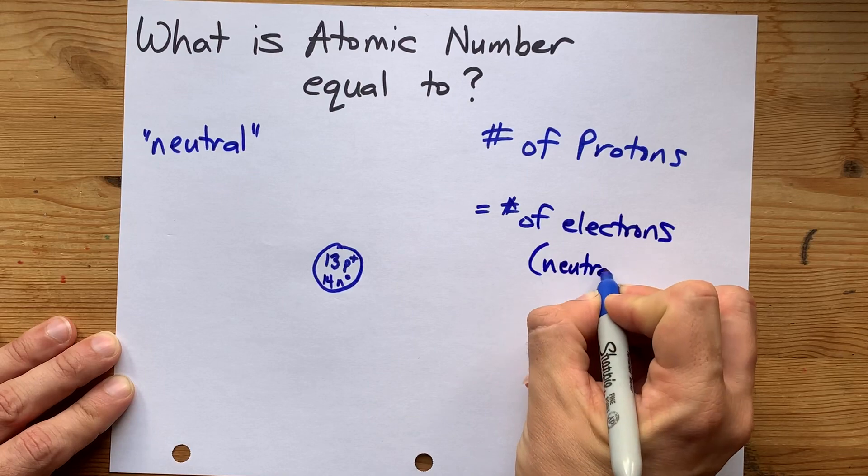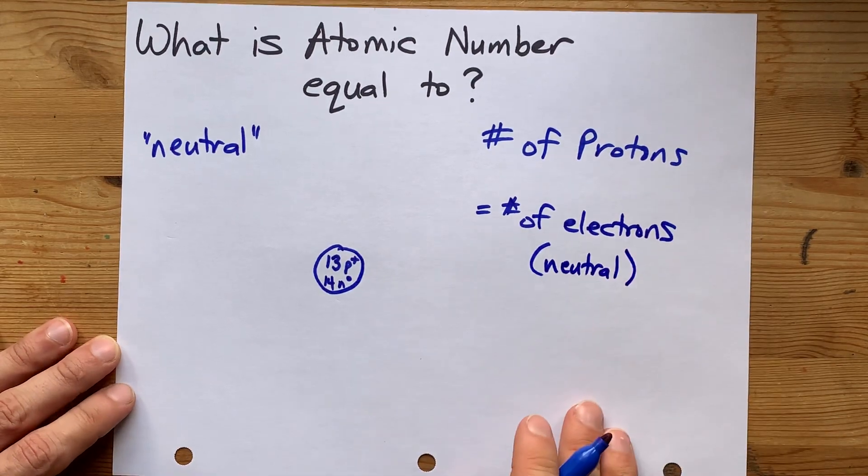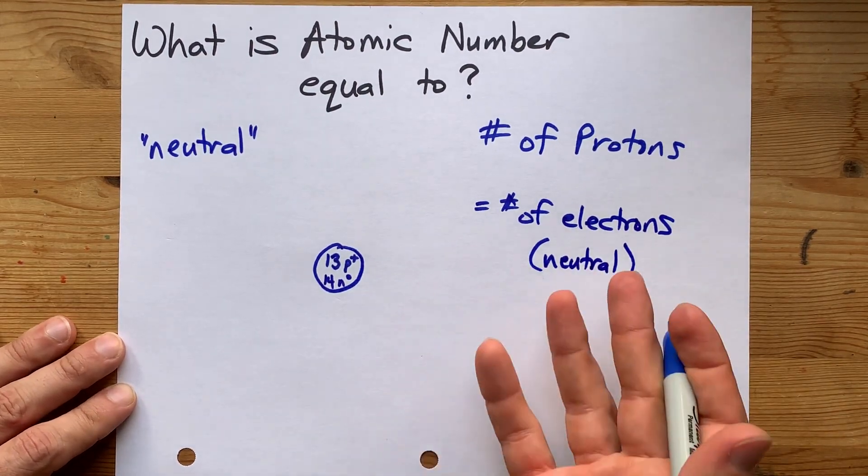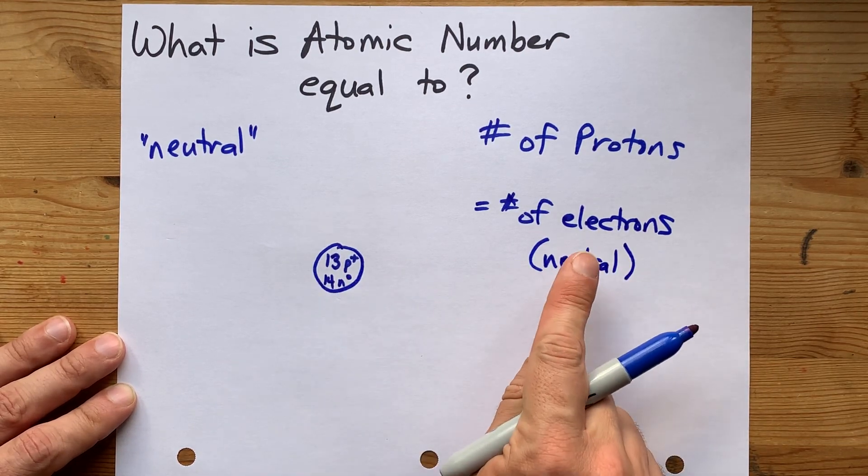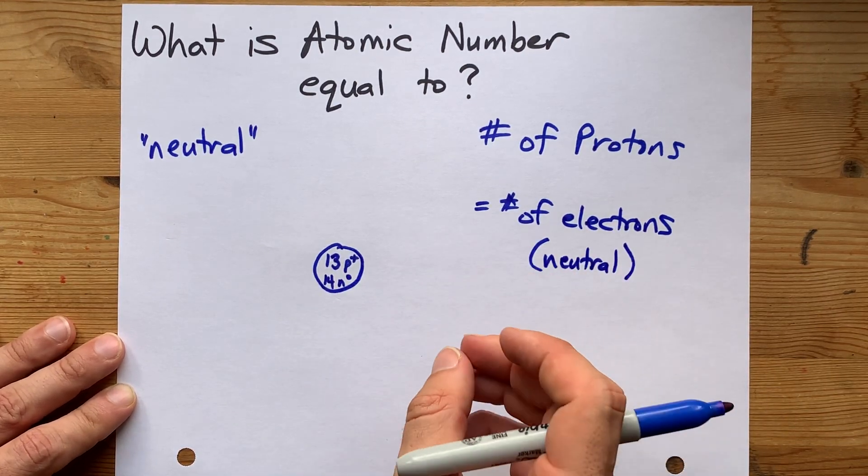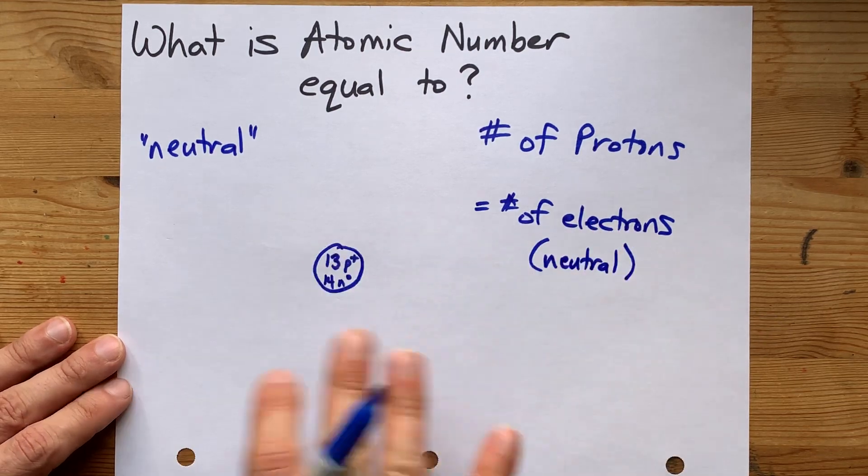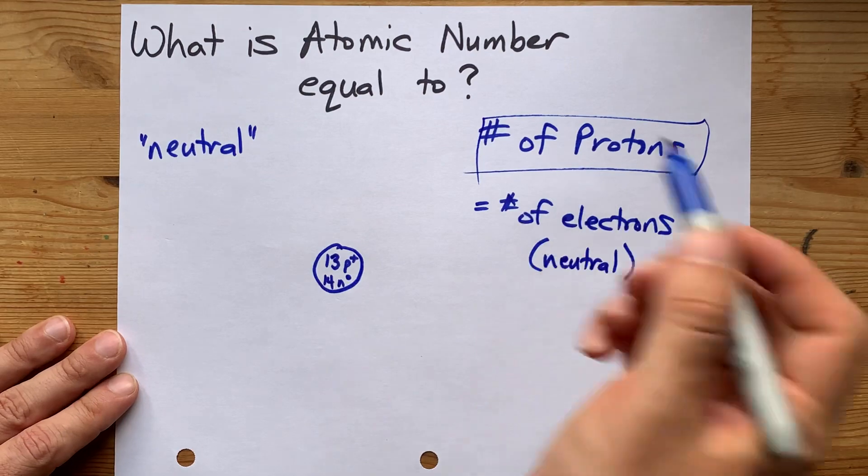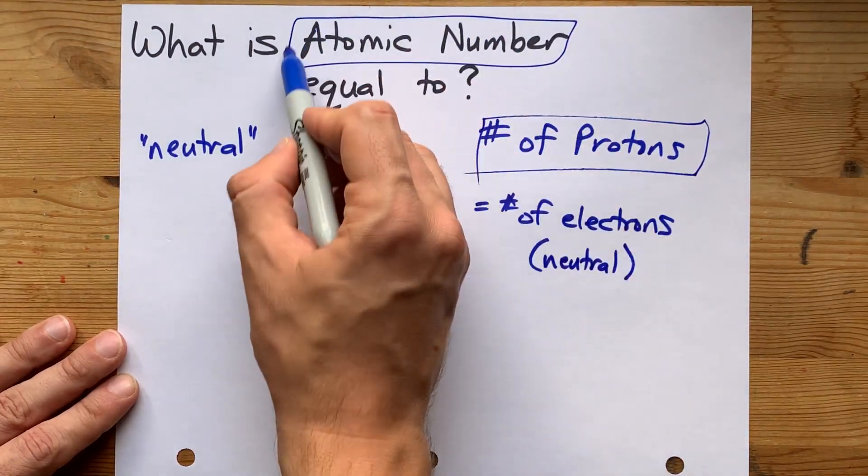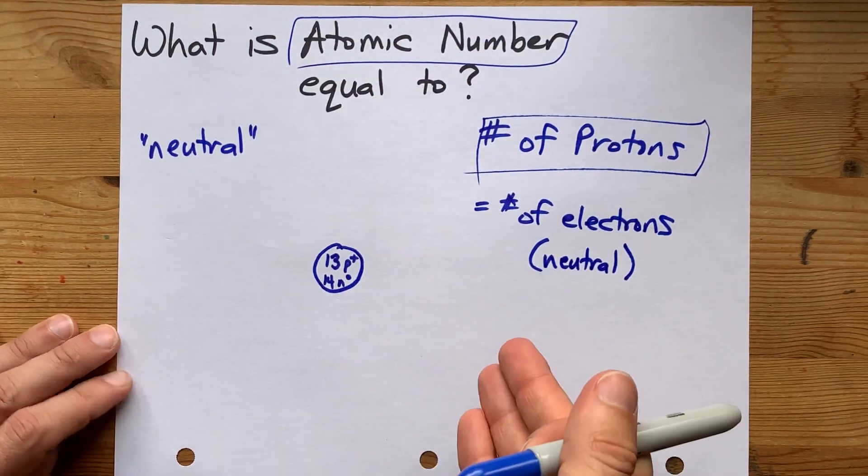Again, only if your teacher specifies that it is neutral. If it's a positively charged atom, then there's going to be more protons than electrons. If it's a negatively charged atom, there's going to be more electrons than protons. But the number of protons is what defines the atomic number and identity of the atom.